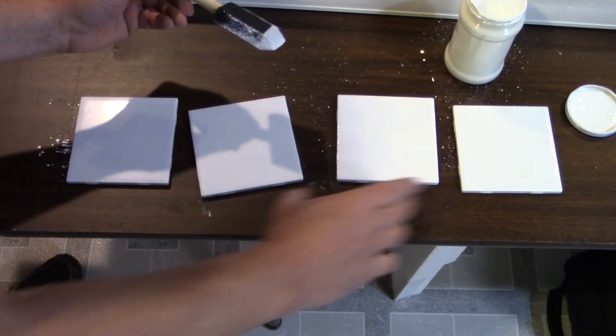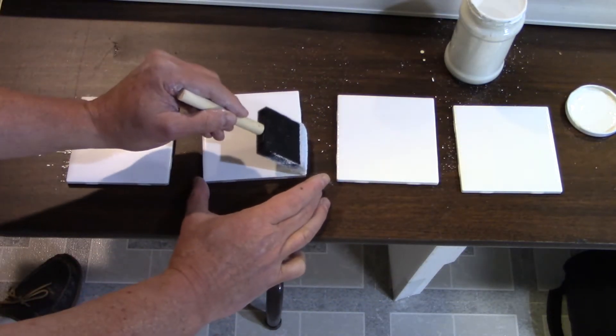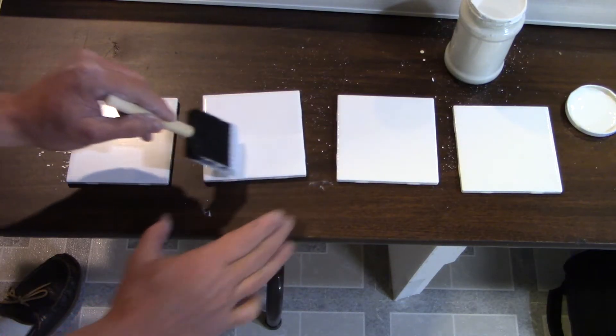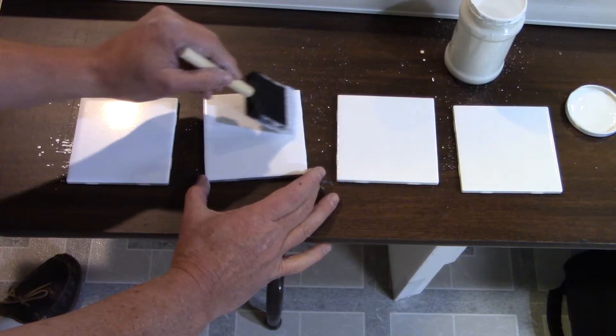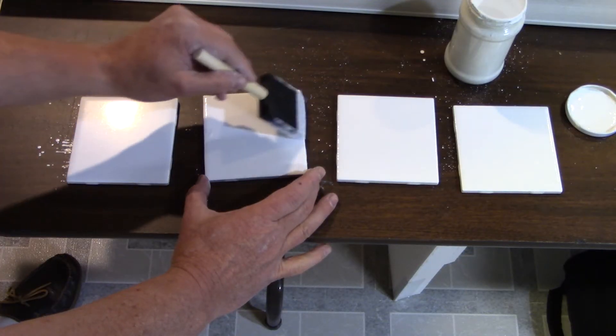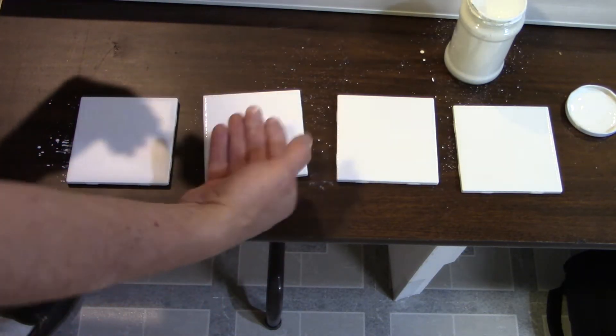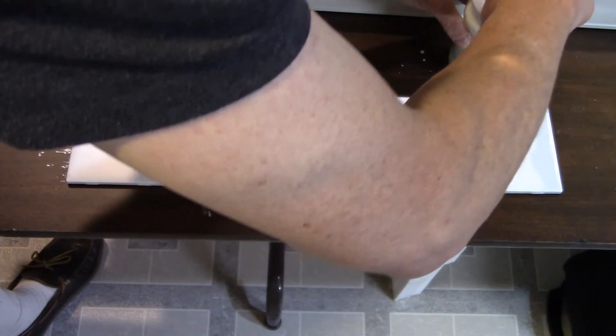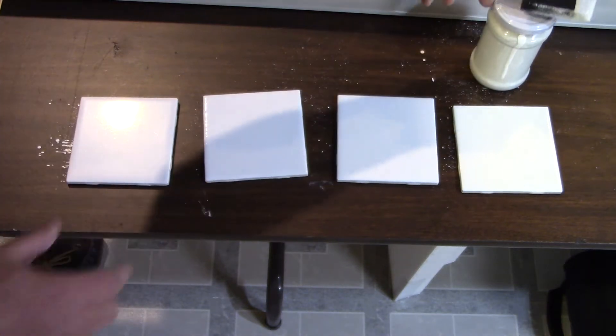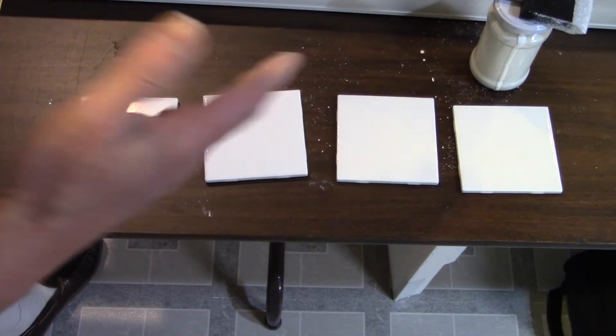I'm thinking just one coat. Looking at how thick this stuff was when it came on, I'm thinking one coat will probably be all we need. Now the denatured alcohol is just a delivery method for this. It evaporates up and it leaves the titanium dioxide behind.